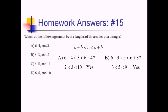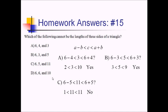For choice C: 6 minus 5 less than 11 less than 6 plus 5 — is 11 between 1 and 11? No, 11 is not less than 11. So these could not be the sides of a triangle. Just for completeness, choice D: 6 minus 6 less than 10 less than 6 plus 6 — 10 is indeed between 0 and 12. So it's choice C that's the odd one out.